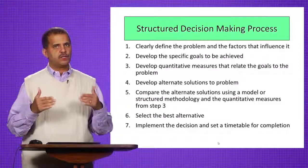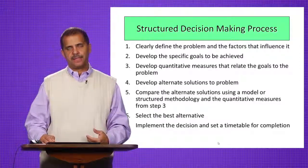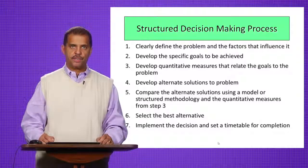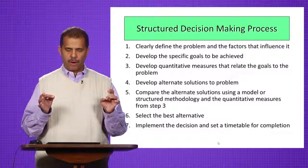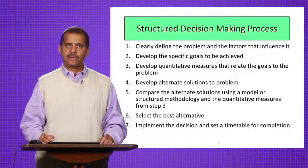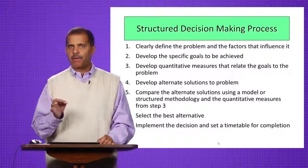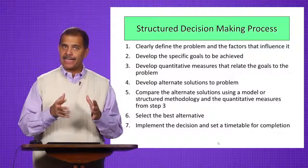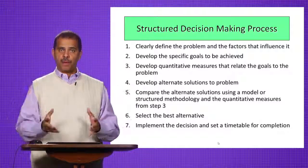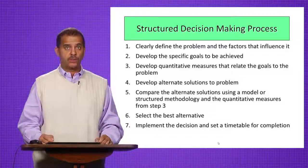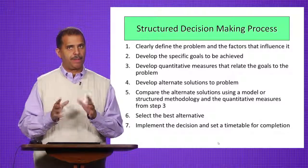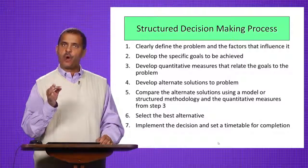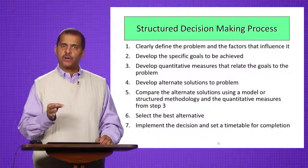Let's walk through a structured decision-making process that can apply to systems design as well as systems operation. First, clearly define the problem and the factors that influence it. When you define the problem, you don't define it just once — you define it again and again and get input from others. You don't want to jump to a premature conclusion if you haven't defined the problem properly. Second, develop specific goals to be achieved to close that gap.